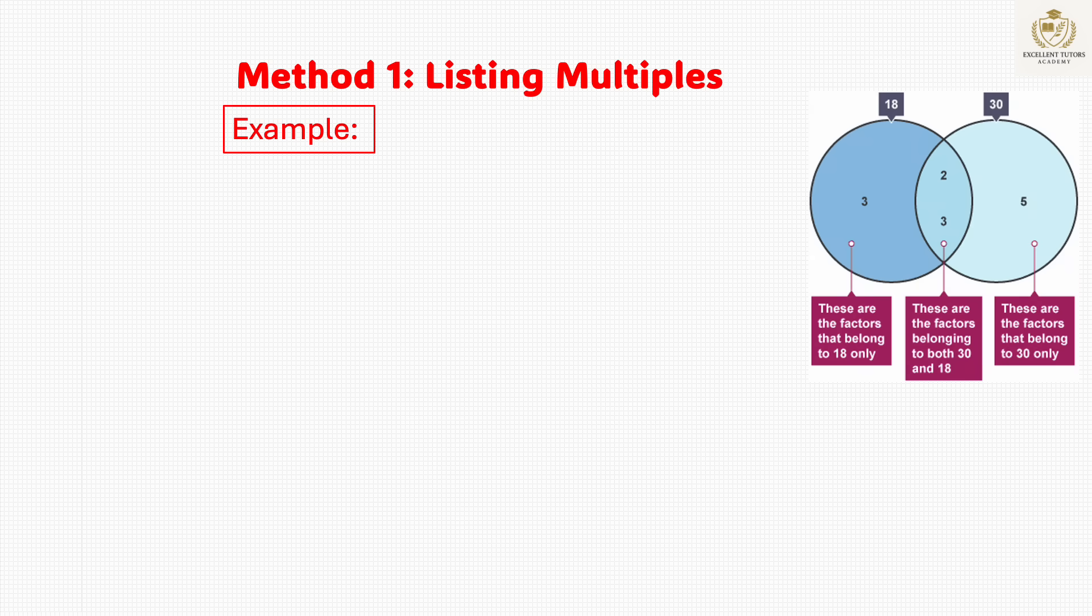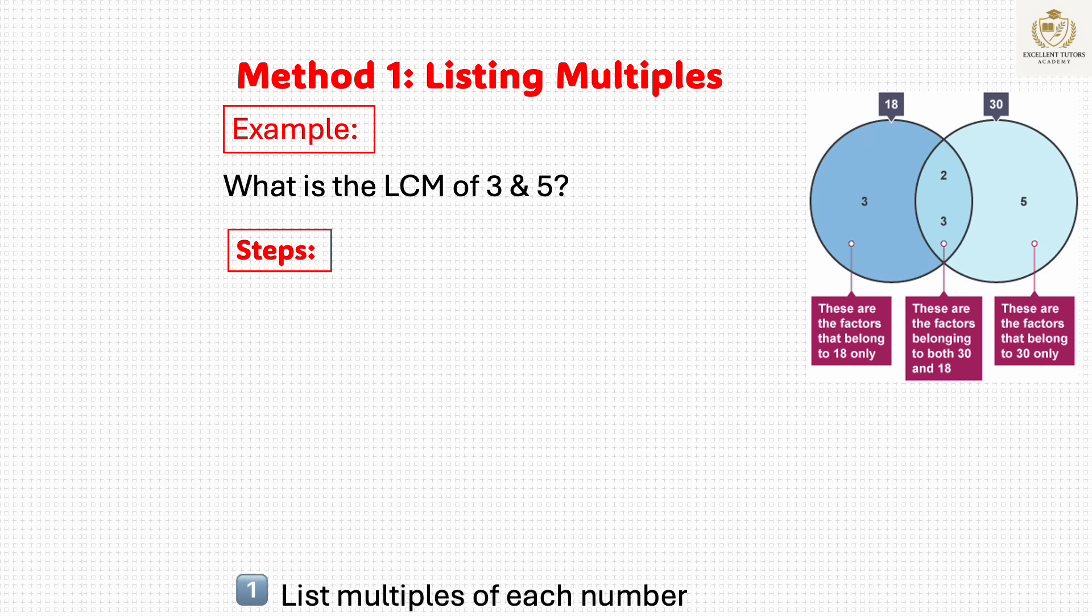The first method is to find an LCM by listing multiples. Let's try an example. What is the LCM of 3 and 5? Step 1: Write out the multiples of each number.